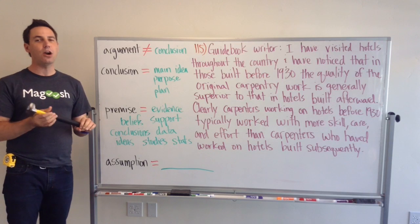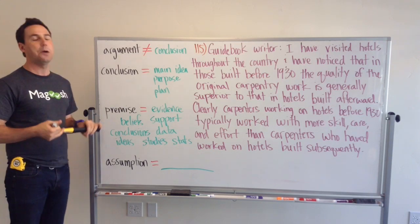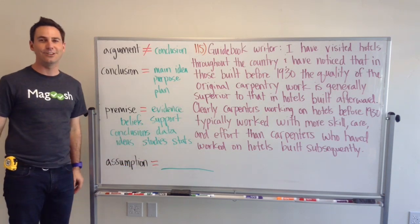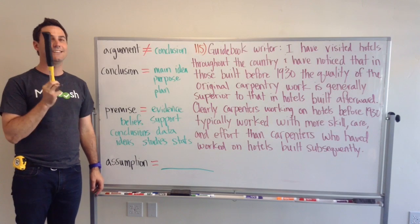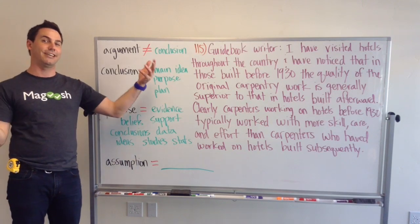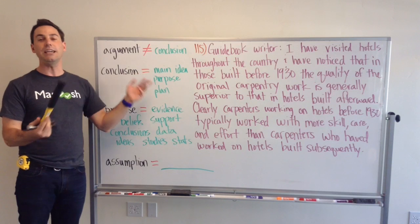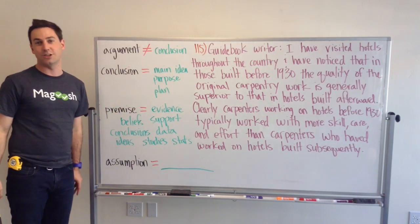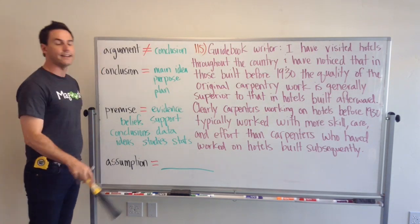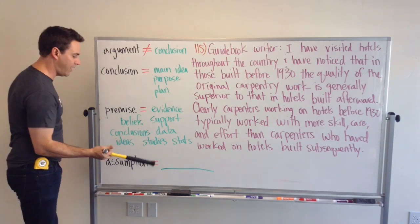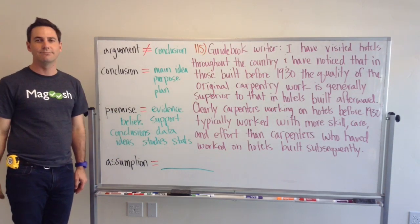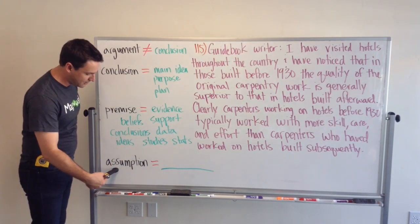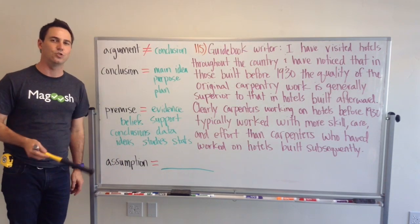The last part of an argument is the assumptions. The assumptions, as you can see, are not written — there's nothing there. That's because the assumption is assumed, meaning the author just accepts that you're going to believe all these other things when he or she tells you the conclusion. An assumption is always unstated, always unwritten. If it's written, then it's a premise — it's no longer an assumption. All of these things could be assumptions if they're not written into the argument.